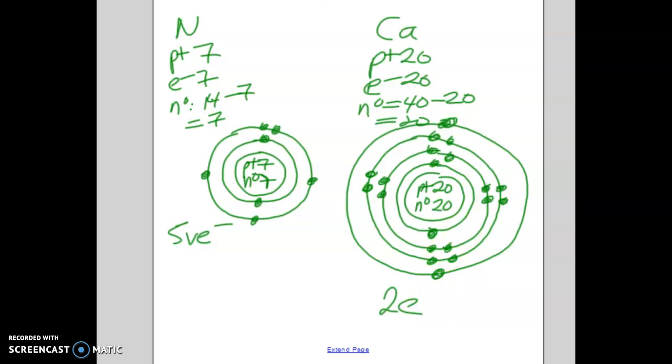So remember the valence electrons is your outside shell. So this has 2 valence electrons. But you just keep adding more and more orbits depending on what you need in order to get to the electron count properly.